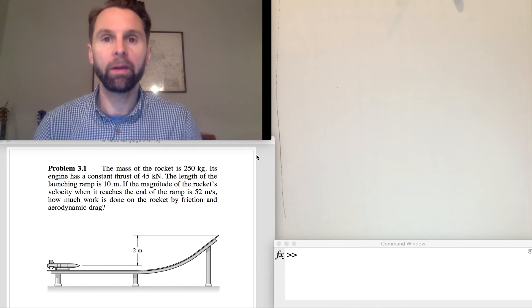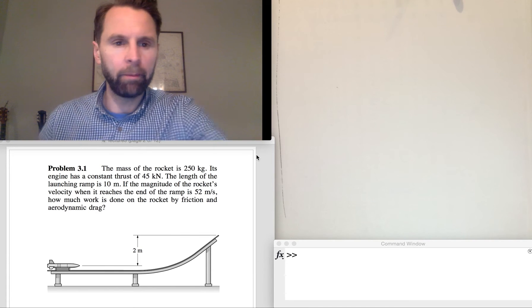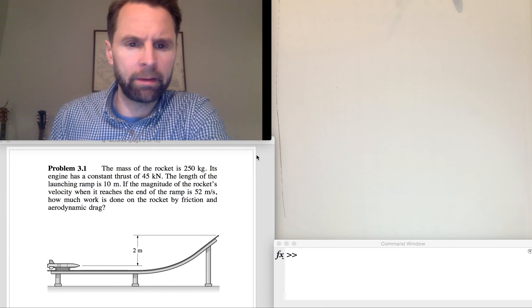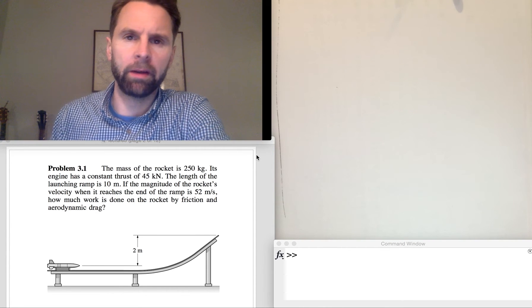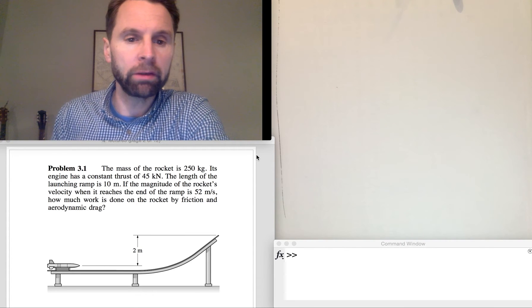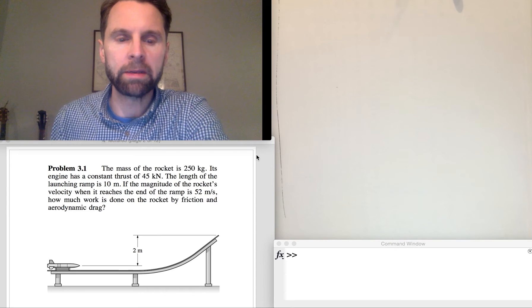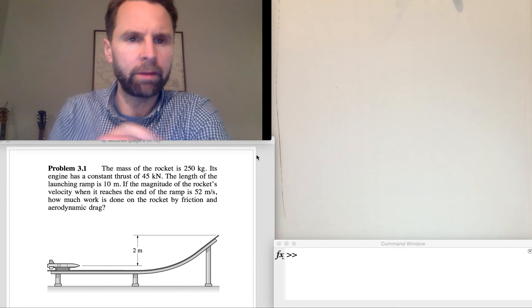Okay, we're looking at Problem 3.1 from Lecture 3. It's a rocket on a ramp, and the question asks how much work is done on the rocket by friction and aerodynamic drag, which are non-conservative forces, between its starting position and when it leaves the ramp.